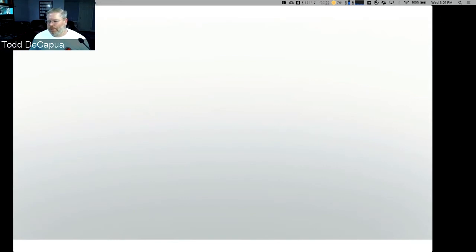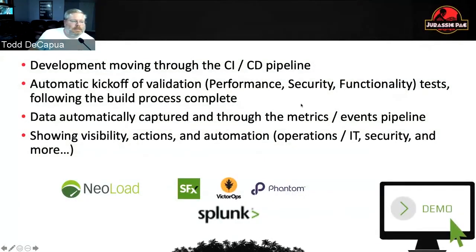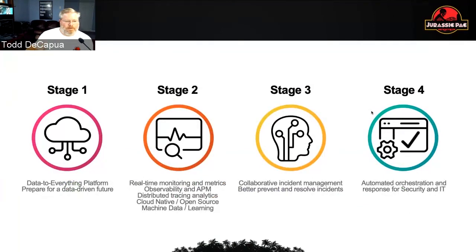So we come back to the problem — hopefully this makes sense. You can understand why in our typical CI/CD pipelines, with all the metrics and events happening, from this demo we moved through that CI/CD pipeline, kicking off validation for NeoLoad and performance with data automatically captured through those metrics. Now the last piece — being able to leverage Phantom for your automated runbooks and then sitting back and watching those notifications happen. Many of you are on a journey.